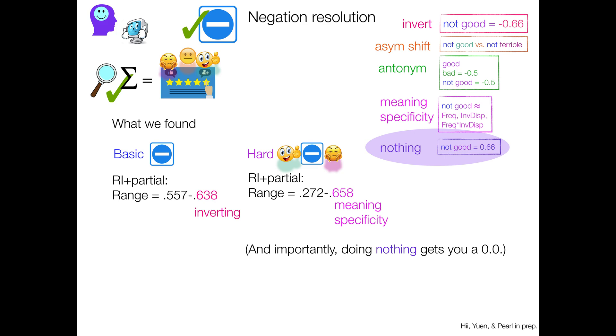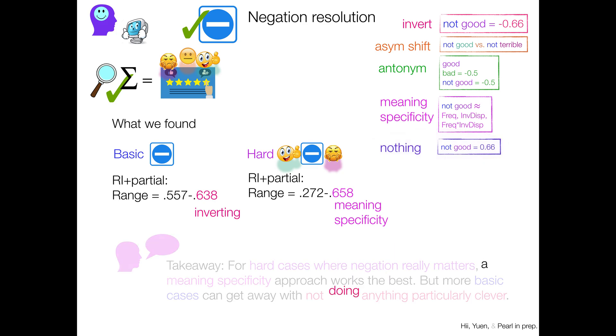And so the takeaway then really is that for hard cases where negation really matters, where ignoring negation really is going to mess things up, it's going to be an egregious error to humans, a meaning specificity approach works the best. But more basic cases where negation doesn't have that much of an impact can get away with not doing anything particularly clever and still get the right sentiment.